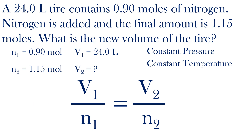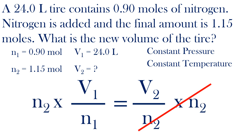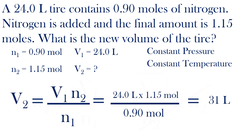I'll multiply both sides by N2, and N2 will cancel on the right side, leaving V2 by itself. I can insert the initial volume times the final moles divided by the initial moles. This gives a final volume of 31 liters. This makes sense — more moles of gas are added, thus the volume increases. Volume is directly proportional to the moles of the gas.